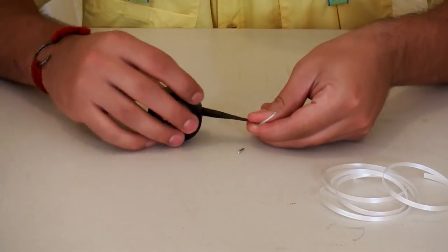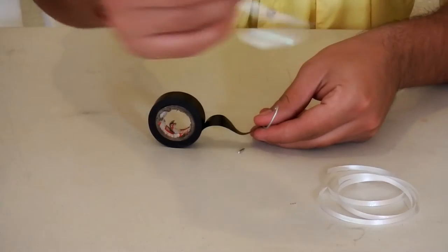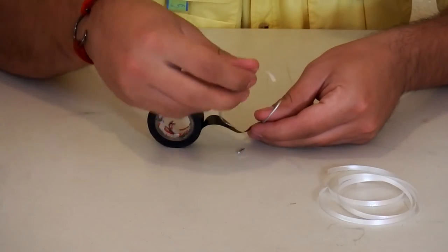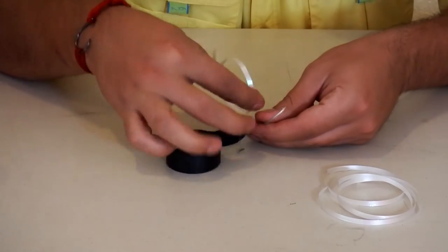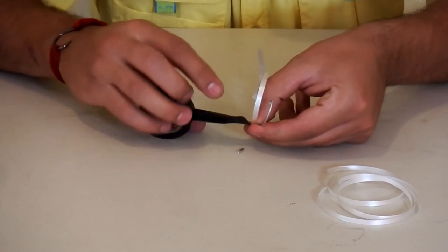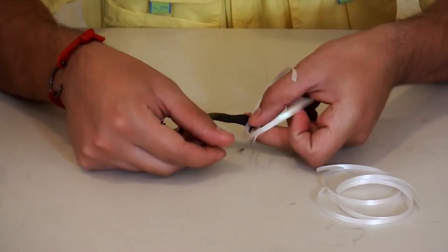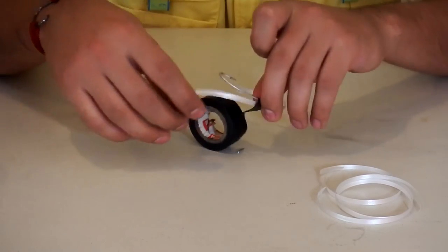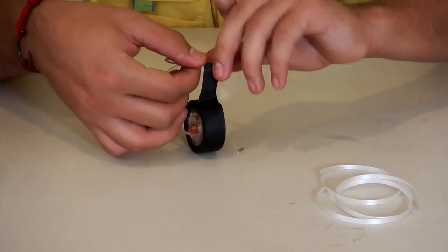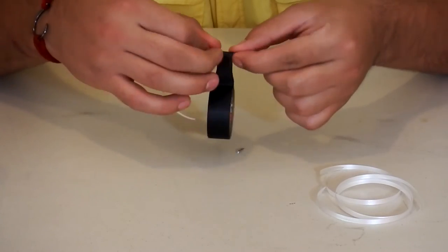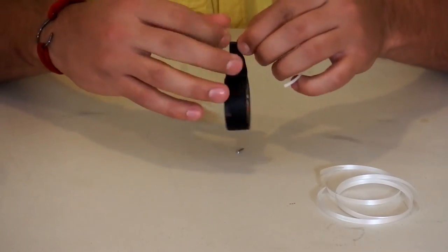Next, we're going to get the string and right around the middle of it, we're going to put it on the hook like this and we're going to wrap that nice and tight.